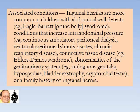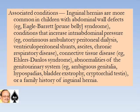Associated conditions: inguinal hernias are more common in children with abdominal wall defects like Eagle-Barrett syndrome or prune belly syndrome, conditions that increase intra-abdominal pressure like continuous ambulatory peritoneal dialysis, ventriculoperitoneal shunt, ascites, chronic respiratory disease, connective tissue disorders like Ehlers-Danlos syndrome, and abnormalities of the genitourinary system like ambiguous genitalia, hypospadias, bladder exstrophy, cryptorchid testis, or family history of inguinal hernia.